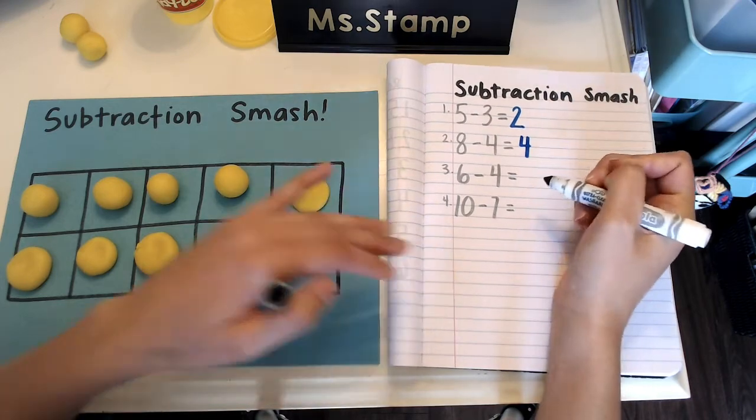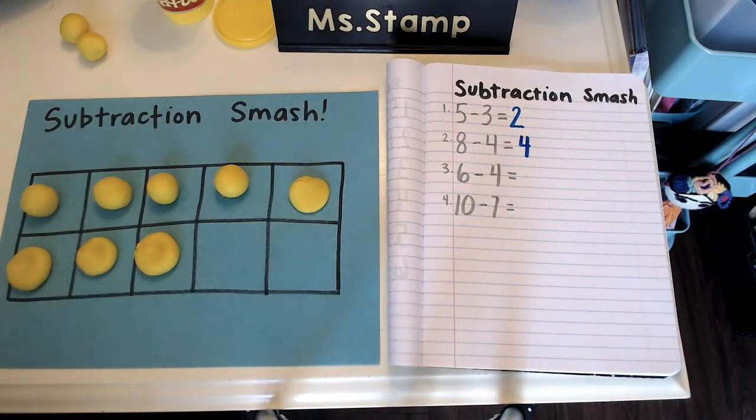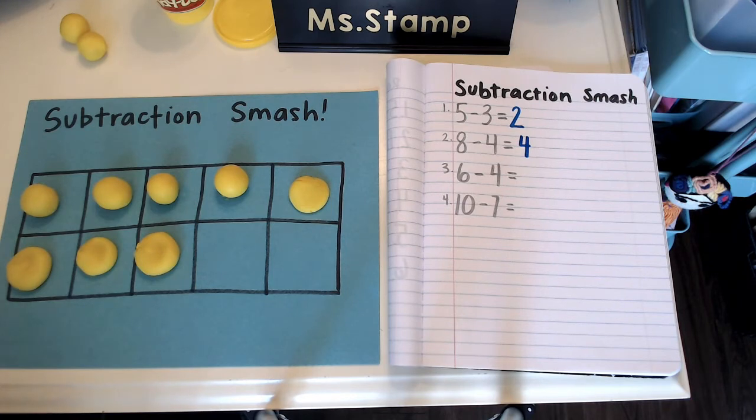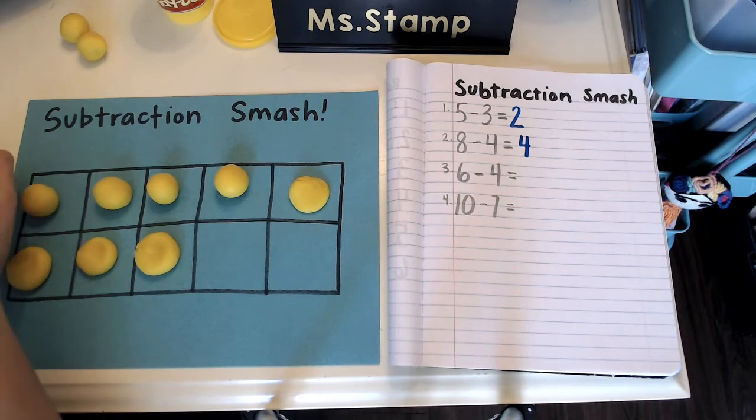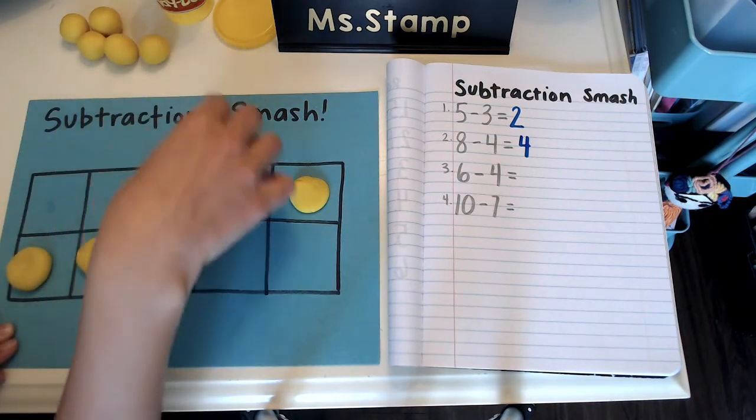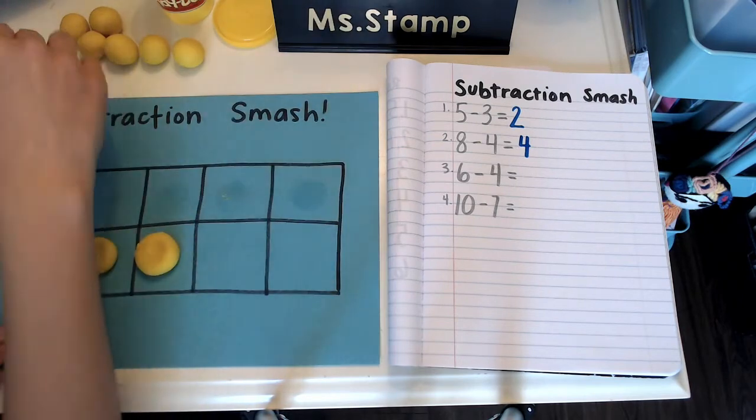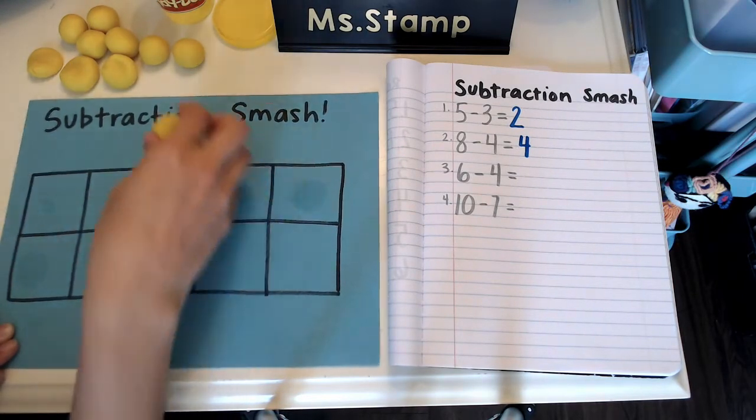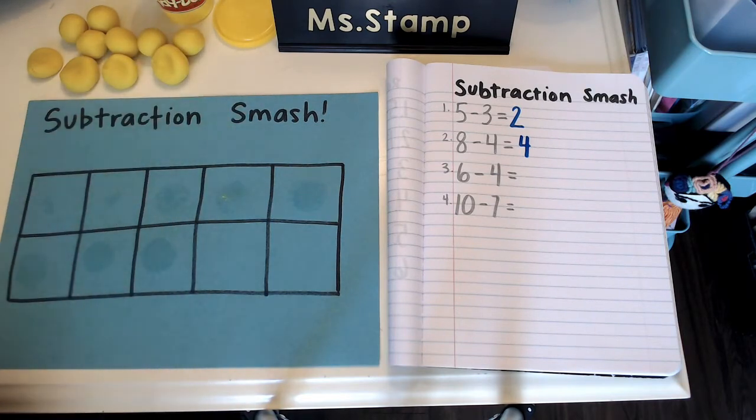Remember if these are too easy for you, if you want to challenge yourself, you can make two ten frames and start with 20 balls of play-doh instead. Okay, so for six minus four, if you are using little pieces of paper or other counters that you have at home, this is how you'll do it.